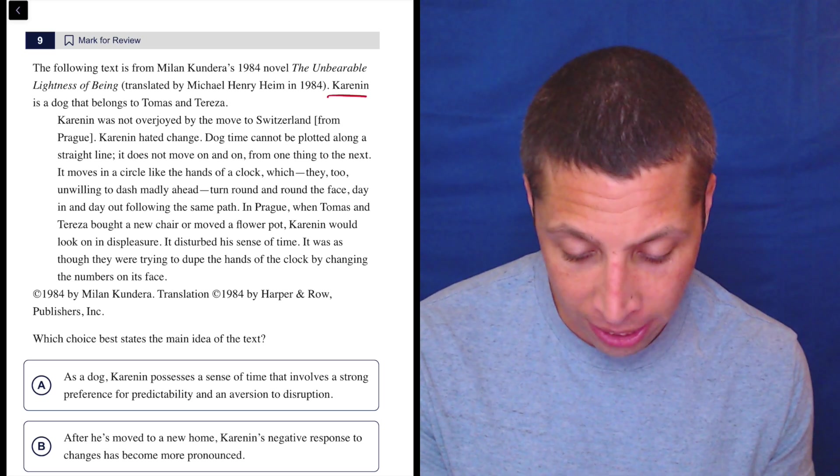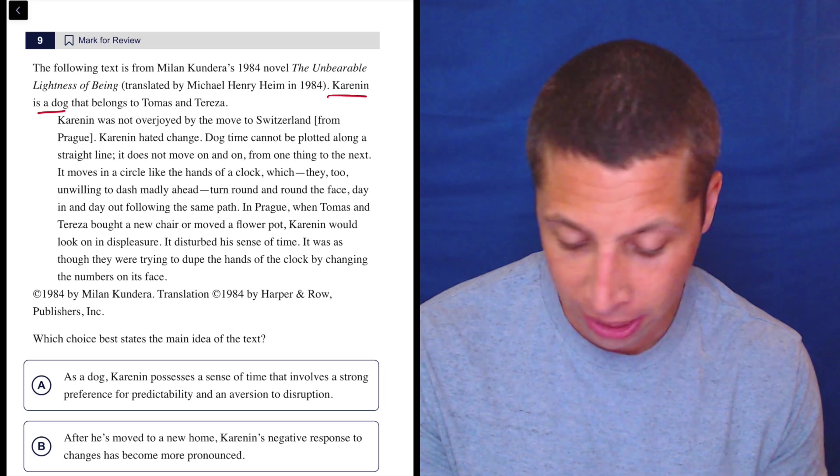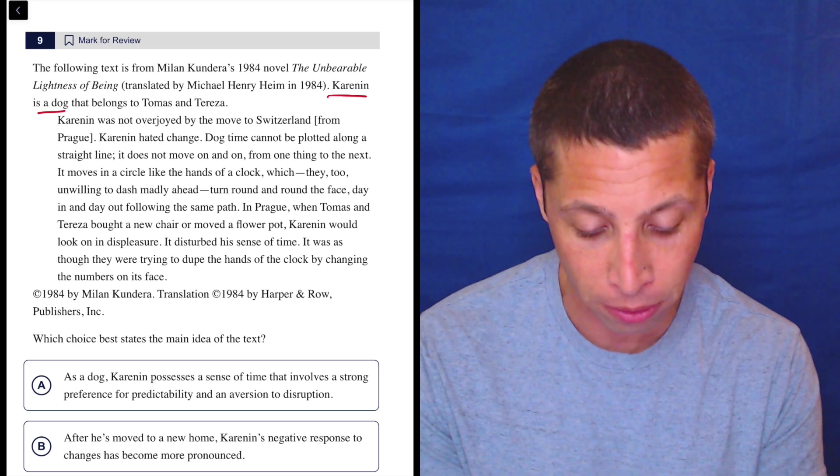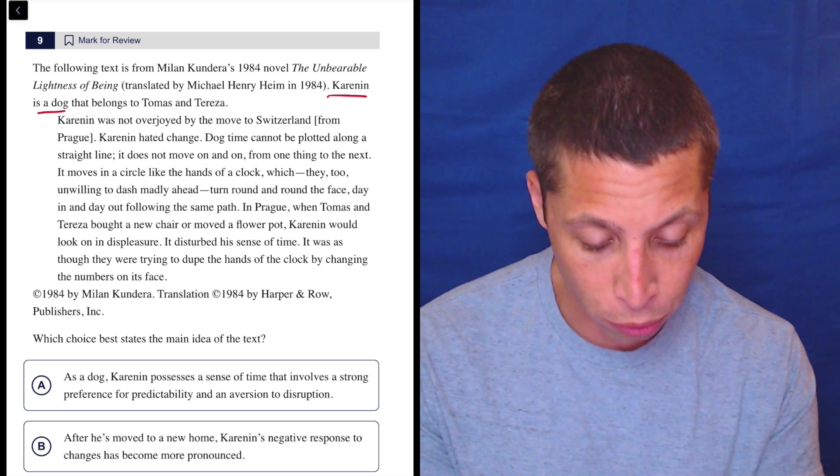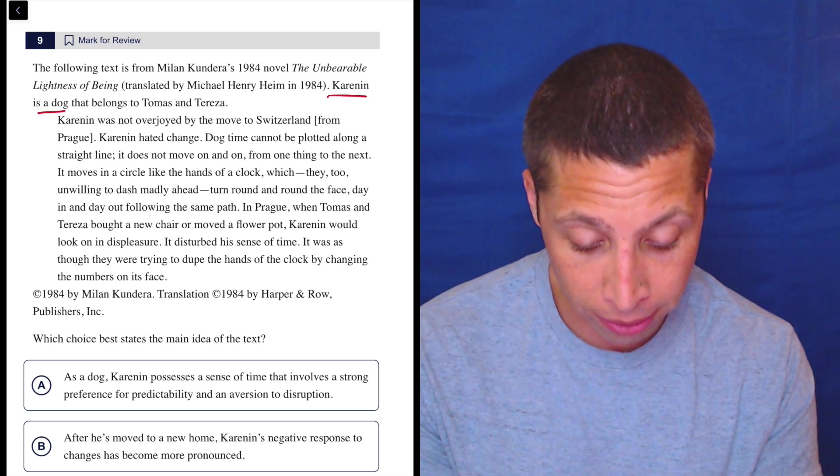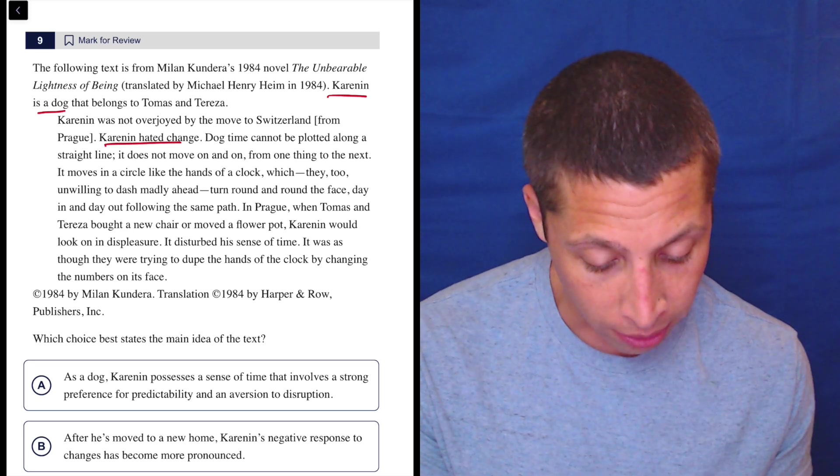So this is Karenin, a dog that belongs to Thomas and Teresa. That's what I care about. I don't care about the title. Karenin was not overjoyed by the move to Switzerland from Prague. Karenin hated change. That seems important.